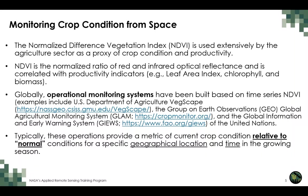We have been monitoring agriculture from space for many decades. The normalized difference vegetation index, or NDVI, has been used extensively by the agriculture sector as a proxy of crop condition and productivity. NDVI is the normalized ratio of red and infrared optical reflectances and has been correlated against productivity indicators — for example, it correlates with leaf area index, chlorophyll at the leaf and canopy level, and total above-ground biomass. Globally, many operational systems have been built around time sequences of NDVI.